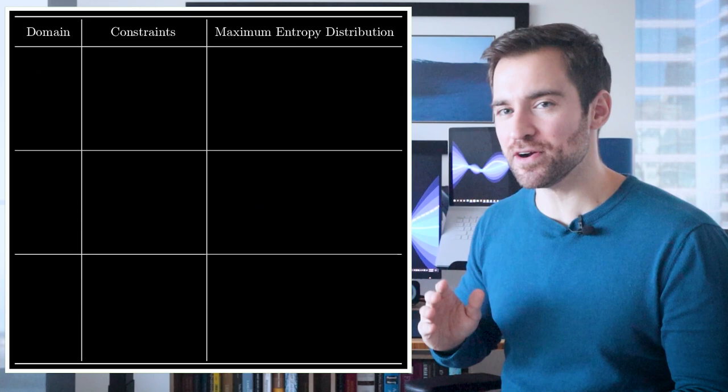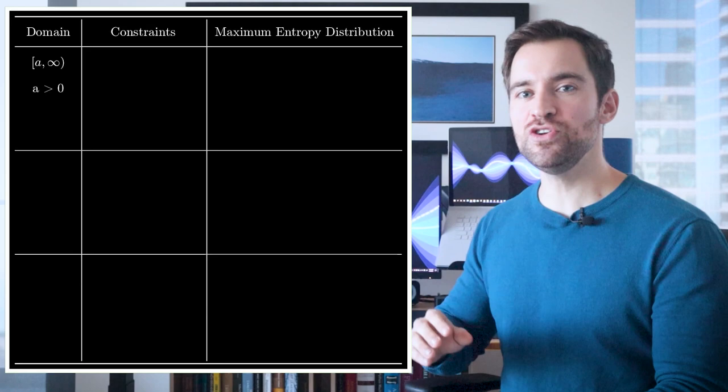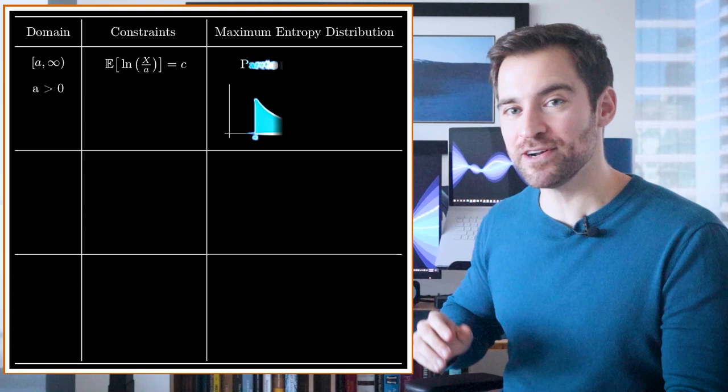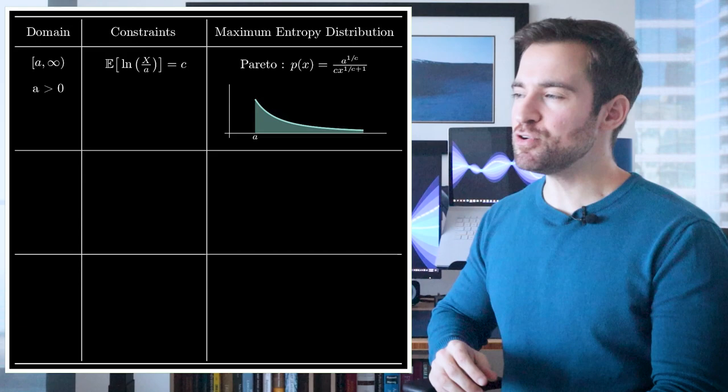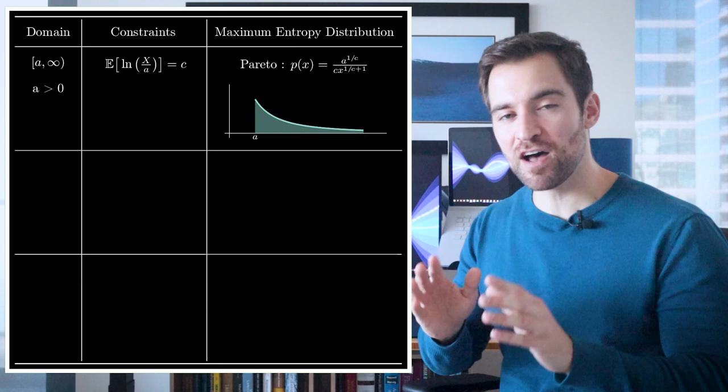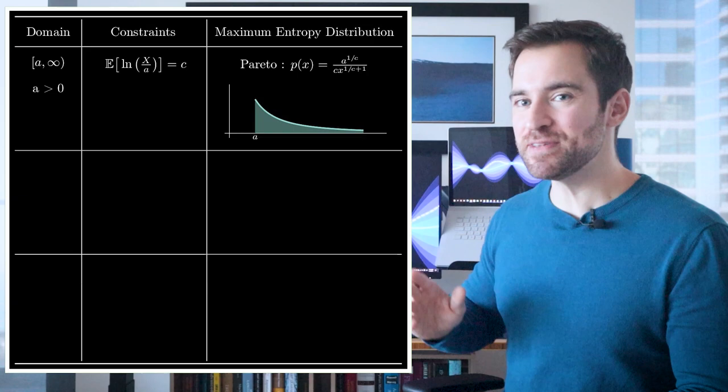It doesn't stop here. Let's say your domain was the real line above some positive value A. Also, let's say you knew the average log ratio of your variable to that number. Well, that would give you the Pareto distribution. This may seem like an odd choice, but it's not that weird. Anytime you come across something where the smallest value is very common, and other values are frequently many multiples of that small value, then the Pareto distribution is a good candidate.